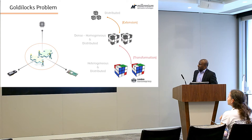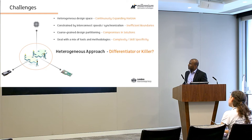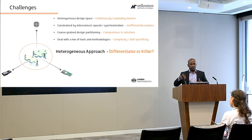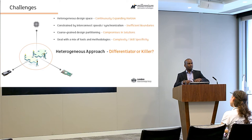We certainly have challenges, and the designer has a lot of them. I'd like to emphasize points two and three: inefficient boundaries, and as a result, we can only map the problem in a coarse-grained fashion. As a result, you have to hit certain compromises. A GPU can never always run data-parallel applications — it has to, at times, do a bit of control flow as well. Similar case for FPGAs. Certain compromises have to be met.